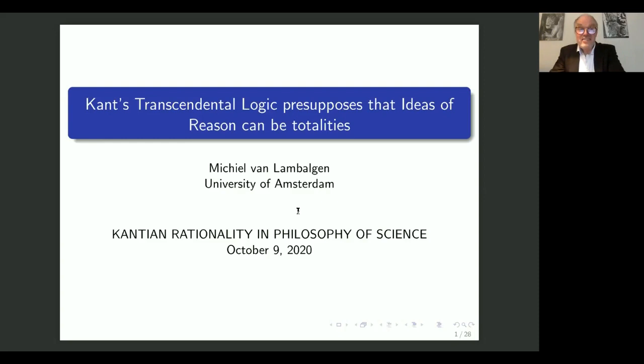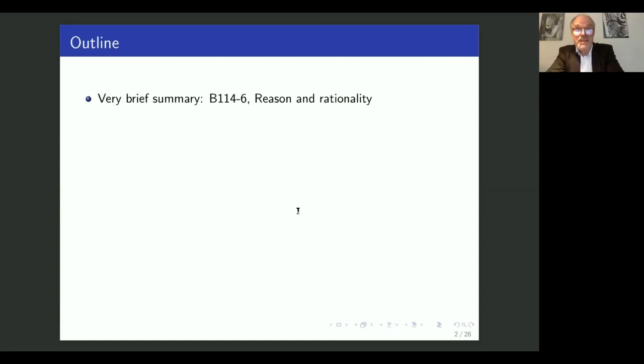Now, the title was submitted a couple of months ago when I didn't yet fully understand what I would be talking about. So the real title is this very brief summary, the intriguing paragraph 12 of the transcendental deduction in the B edition, and what this has to do with reason and rationality.